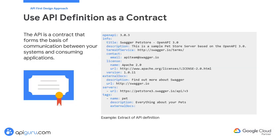Using API definitions as a contract is a fundamental principle in the API-first design approach, which revolves around defining an explicit formal agreement to ensure that all stakeholders — whether they are back-end developers, front-end developers, or external partners — have a shared understanding of how the API is expected to behave. The API definitions include detailed information about the API's endpoints, request and response formats, authentication mechanisms, error codes, and other crucial details.